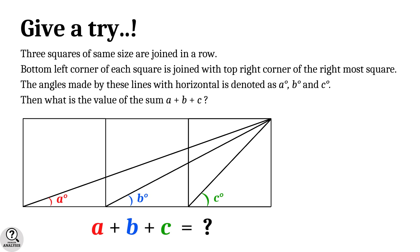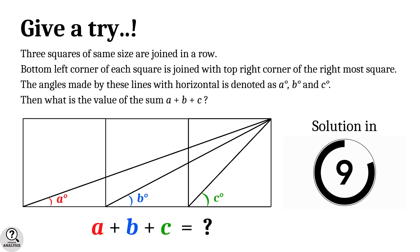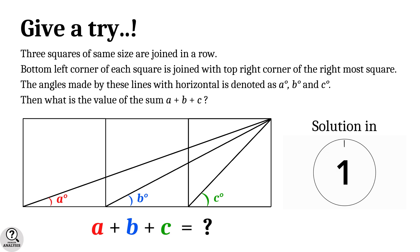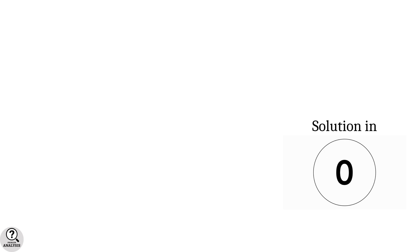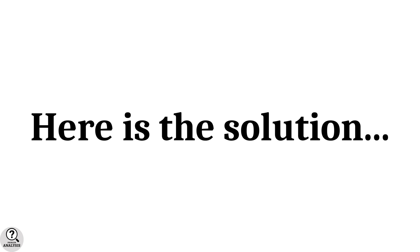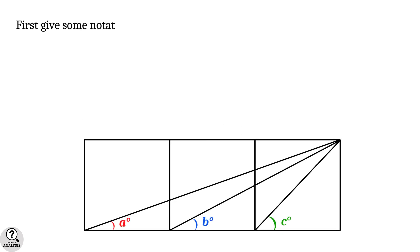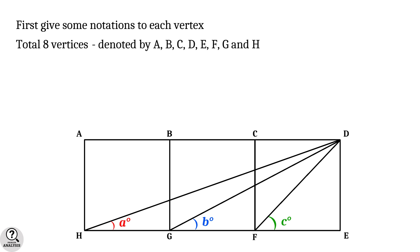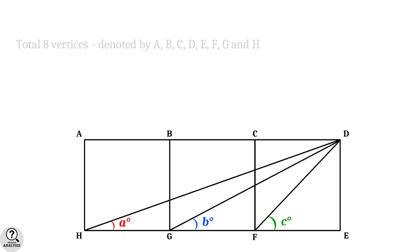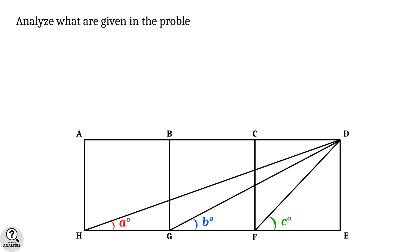The problem is: what is the value of the sum a plus b plus c? If you want to attempt the problem, pause the video and give it a try. The solution is right here. First, let's give some notations to each vertex. As you can see, there are a total of eight vertices formed by the squares, and they are denoted by the letters A to H.